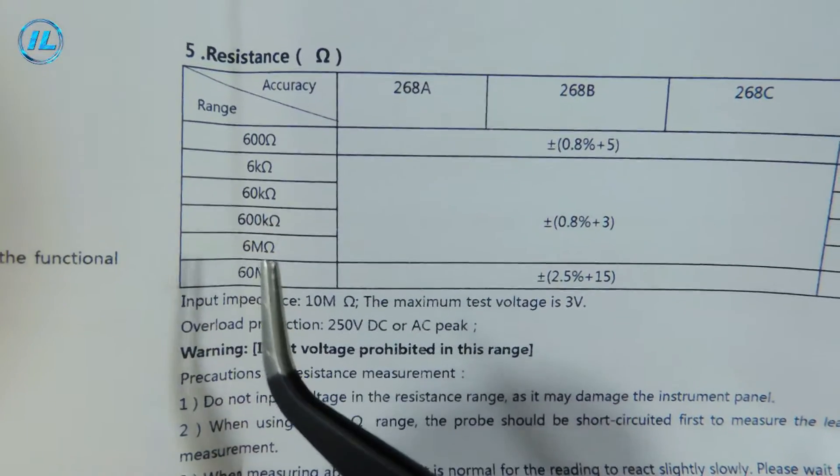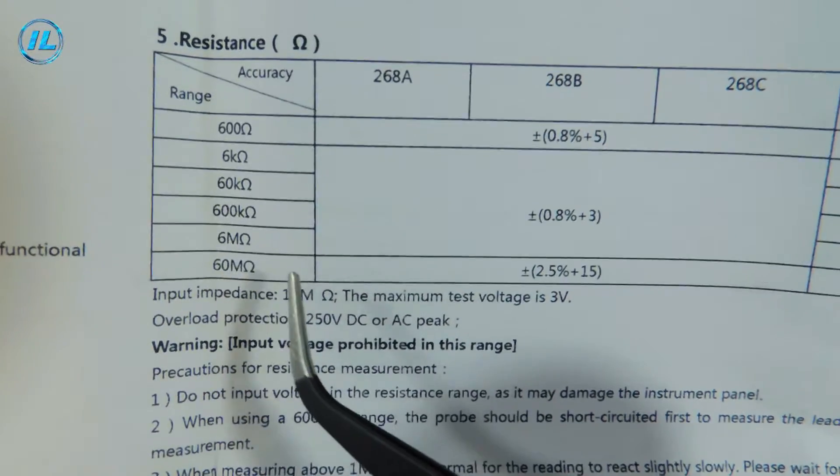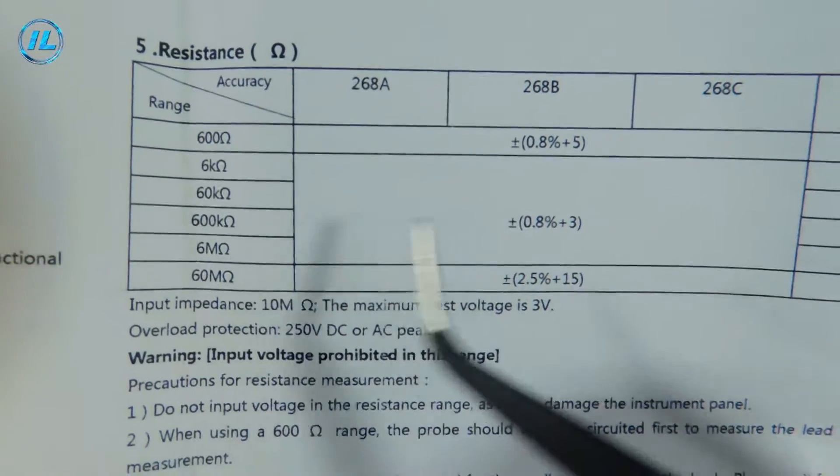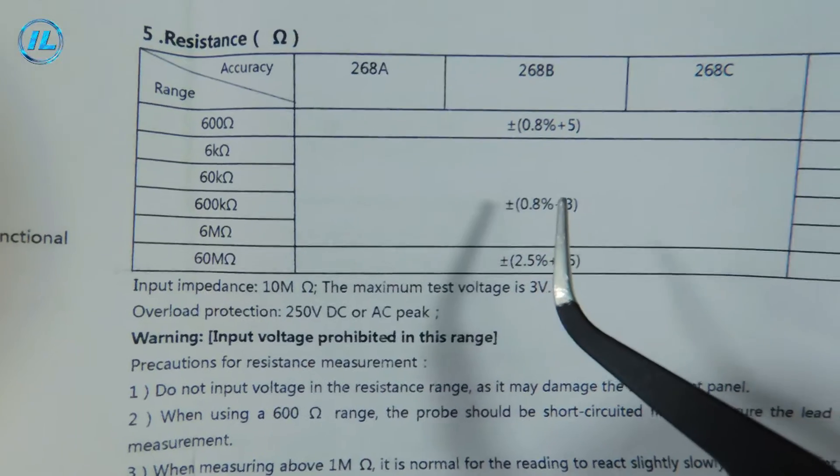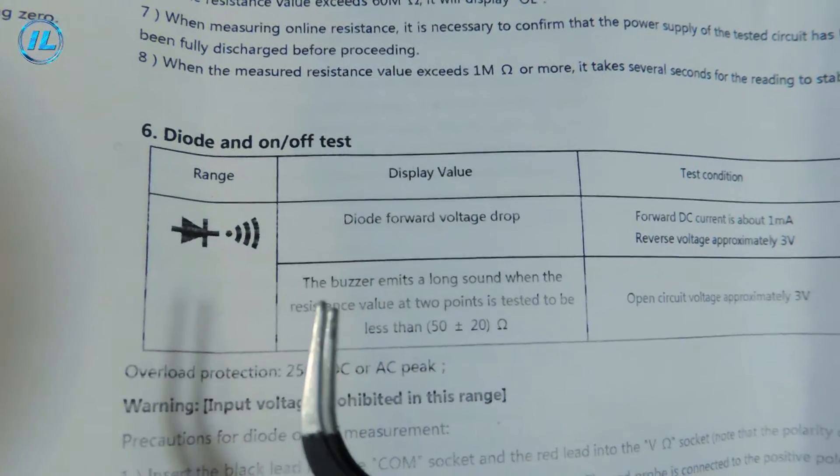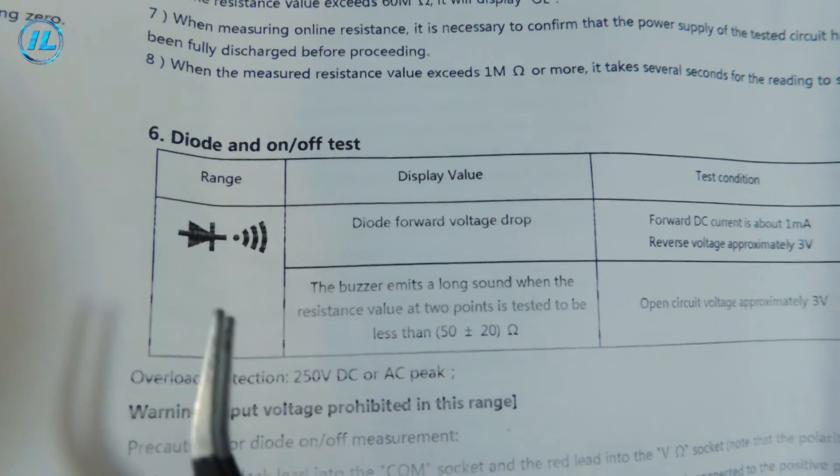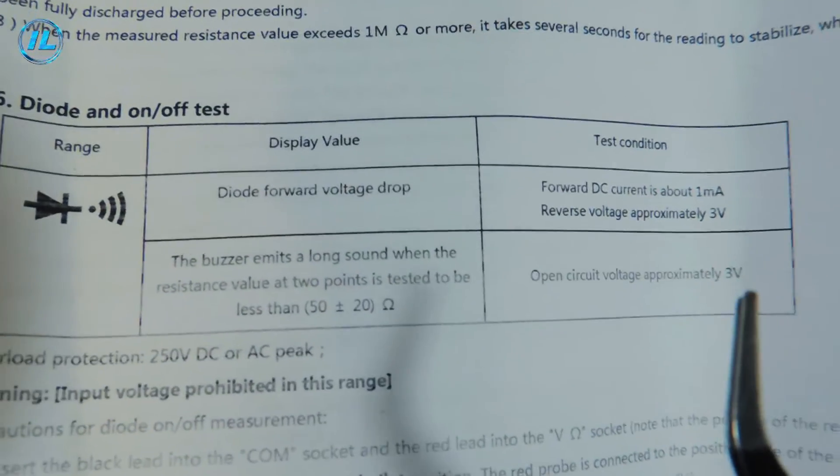Next, the resistance measurement, up to 60 megaohms. The margin of error is 2.5%. When measuring up to 6 megaohms, the error will be 0.8%. The device has standard functions of checking the electrical circuit and checking diodes with a voltage of 3 volts on the probes.